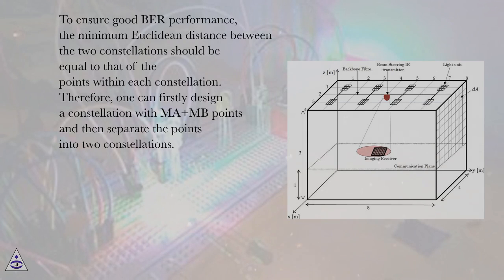Therefore, one can firstly design a constellation with MA plus MB points and then separate the points into two constellations.